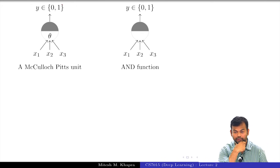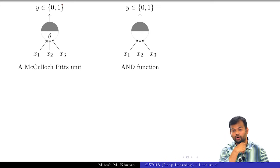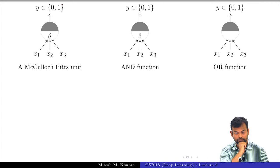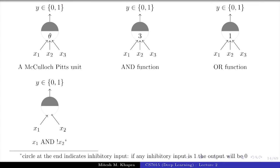Suppose I am trying to learn the AND function. When would the AND function fire? When all the inputs are on. So what should be the value of the threshold in this case? 3 — everyone agrees. What about the OR function? 1. Now let us look at a few more functions. This circle here represents that this input is an inhibitory input — if that is on then the neuron is not going to fire. That is how it is represented.